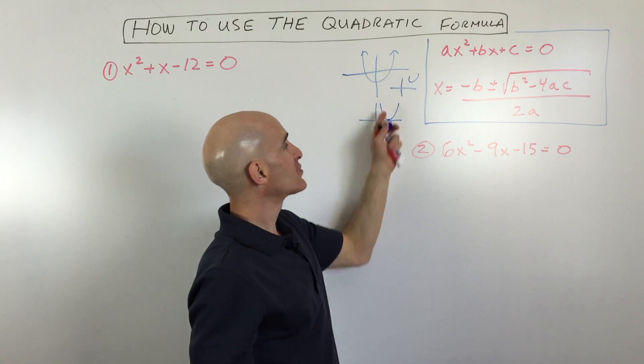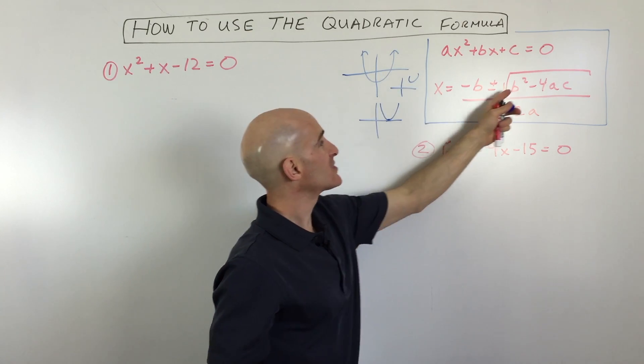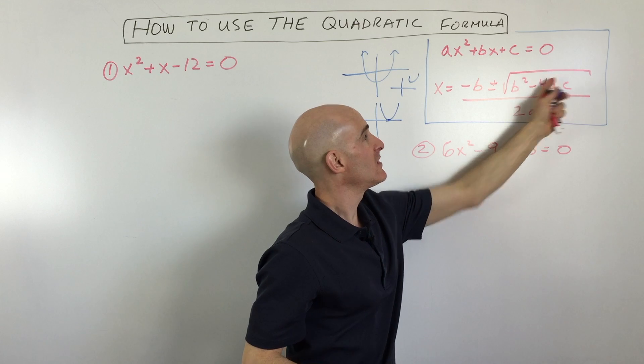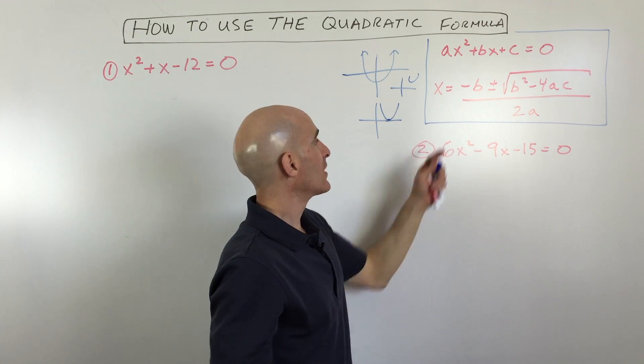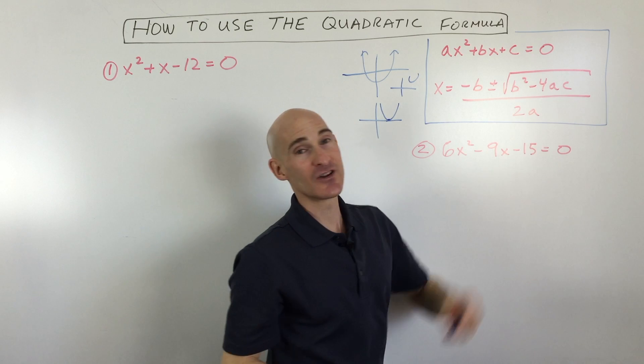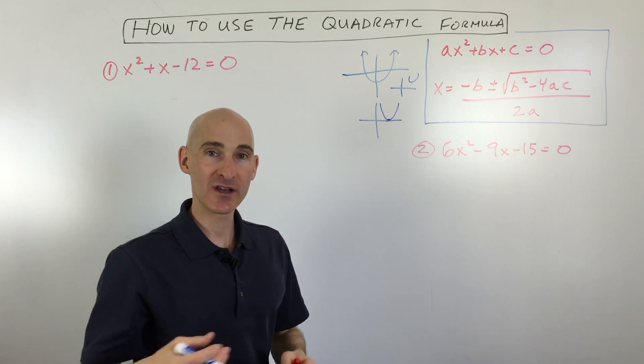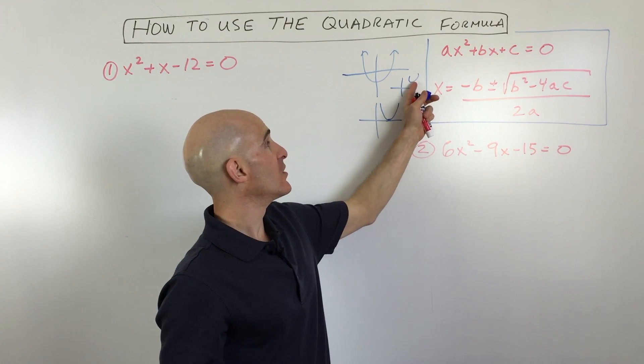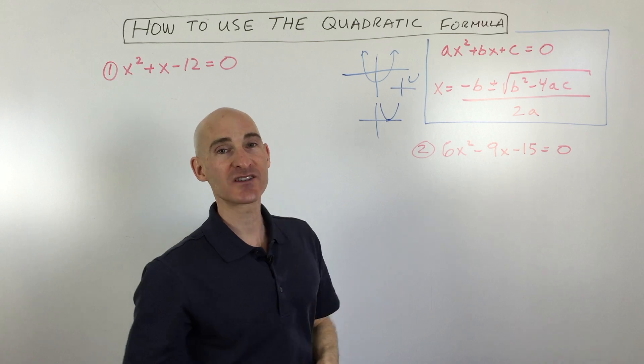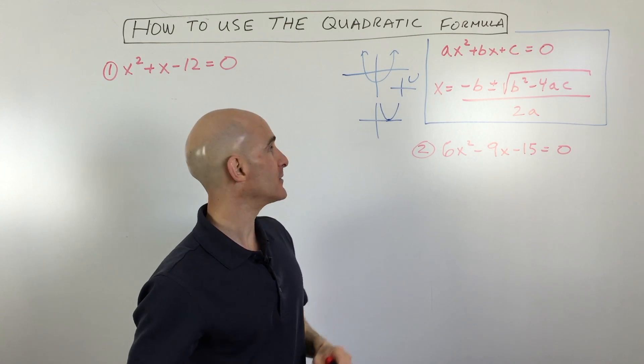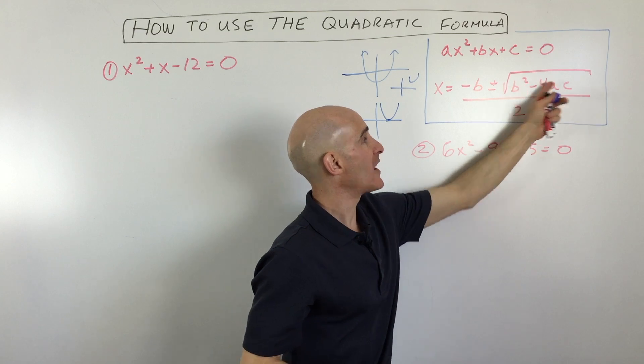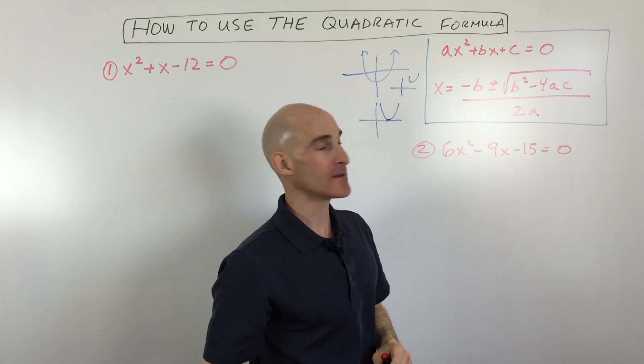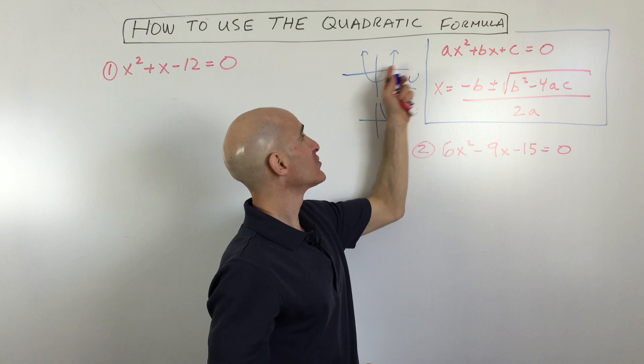And basically what these correspond to is that if this quantity here comes out to zero, you're just going to have negative b over 2a. But if this quantity comes out to a negative number, you can't take the square root of a negative number without getting imaginary numbers. So you would get no real solutions. It's not crossing the x-axis at all if you were to graph it. And then if it's positive, this quantity here, the b squared minus 4ac, then you would have two solutions.